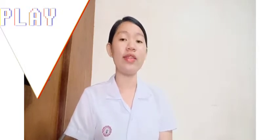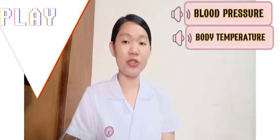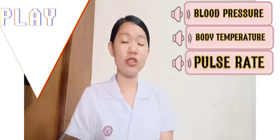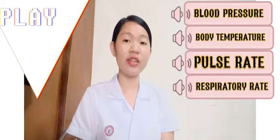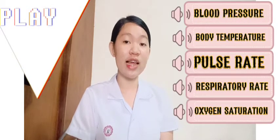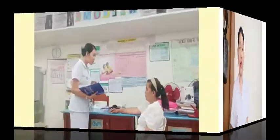Vital signs consist of 6 elements: blood pressure, body temperature, pulse rate, respiratory rate, oxygen saturation, and lastly we also consider pain rating.